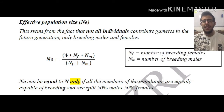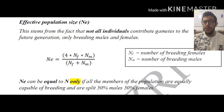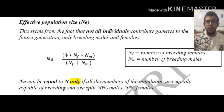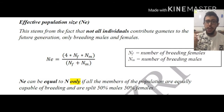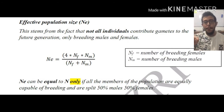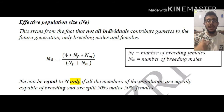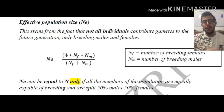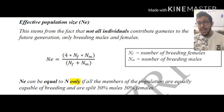Now, the easiest way to calculate the effective population size is as follows. NE is equal to 4 multiplied by the number of breeding females in a population, multiplied by the number of breeding males in a population, all divided by the number of breeding males plus the number of breeding females.